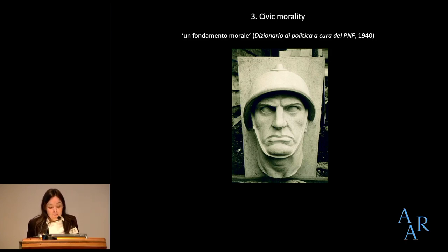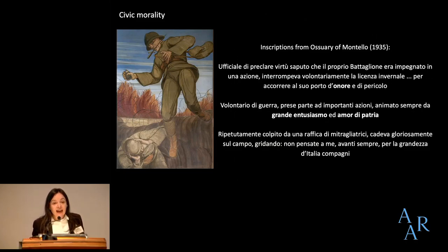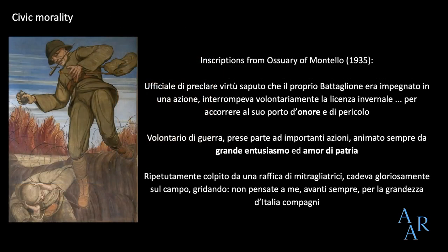Within the ossuaries, fallen soldiers are presented as models of civic virtue. At the ossuary of Montello, established in 1935, inscriptions covered the tombs of decorated soldiers and praised those soldiers for specific moral qualities. For instance, one soldier is remembered as an officer of evident virtue who, having learned that his battalion was engaged in an offensive, voluntarily interrupted his winter leave to run back to his position of honor and danger — a sense of self-sacrifice for the state.